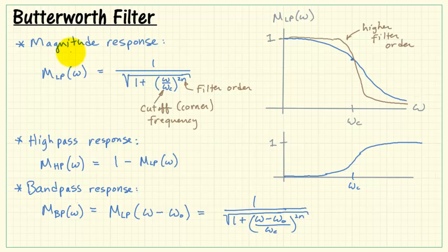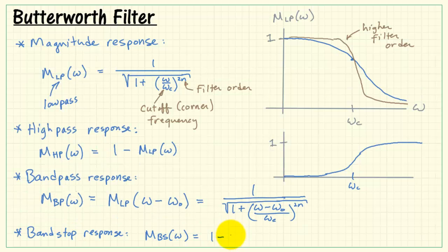In the same way that we got a high-pass from a low-pass, we can get a band-stop from a band-pass response. Our fourth filter type, therefore, is created this way. Call this m sub bs for band-stop. That's a function of omega again. That'll be 1 minus our band-pass response, m sub bp of omega.